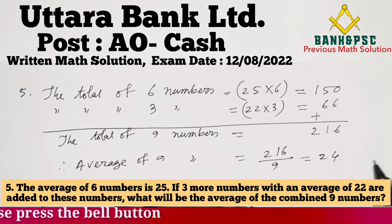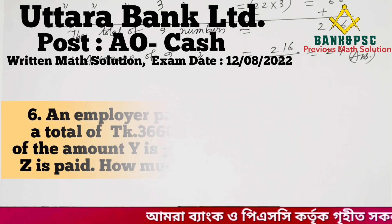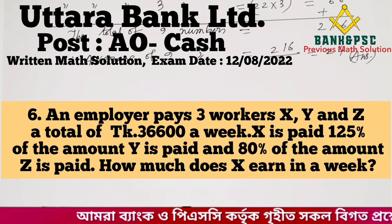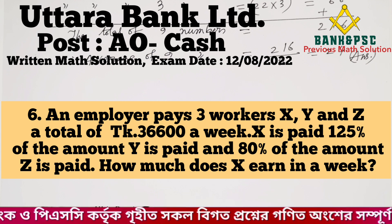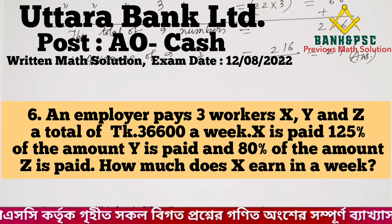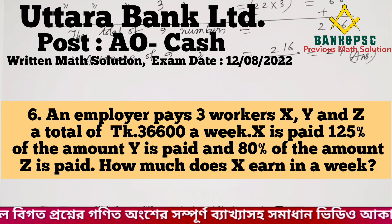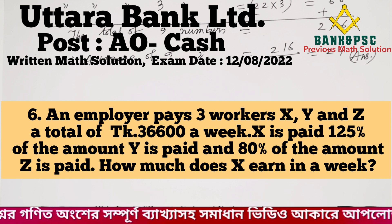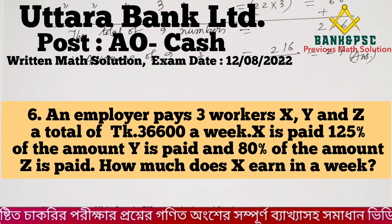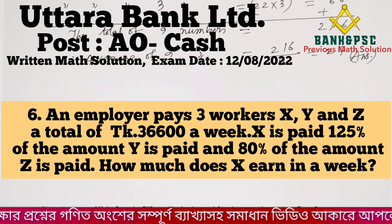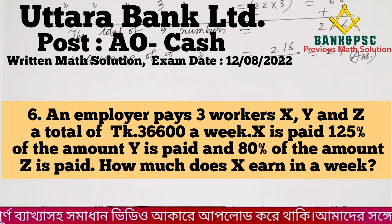The answer is 24. Next question: employers pay three workers X, Y, and Z a total of 36,600 taka a week. X is paid 125% of the amount Y is paid, and 80% of the amount Z is paid. How much does X earn in a week?